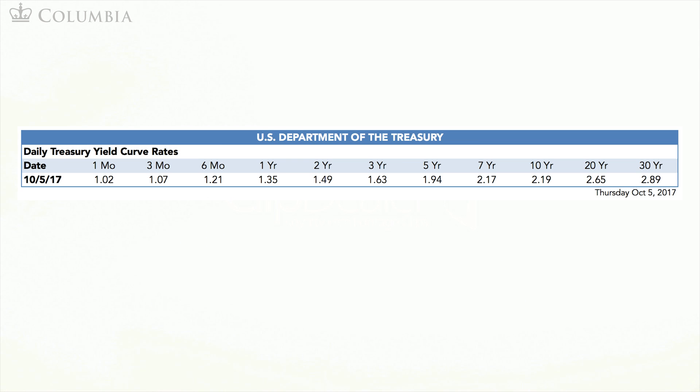Let's start with the risk-free rate. The risk-free rate is the rate or yield offered by government bonds. We learned all about government bonds and their yields in Course 1. Here is a table with information on government bond yields for different maturities. Standard practice for corporate valuation is to use a yield that corresponds to a 10-year maturity. In this case, this yield is 2.19%.